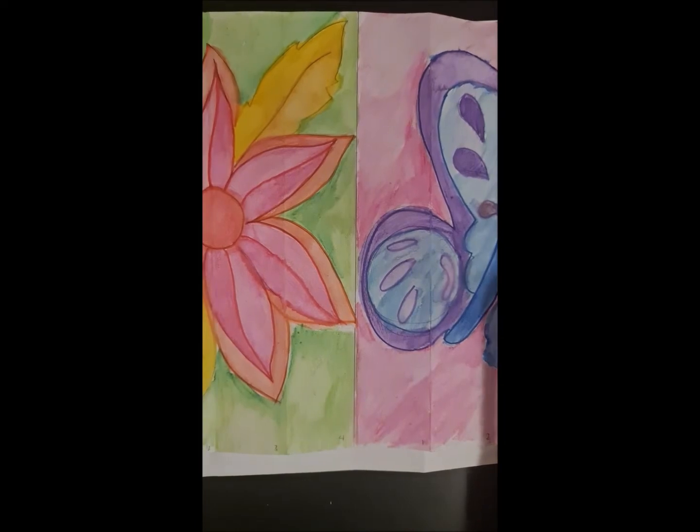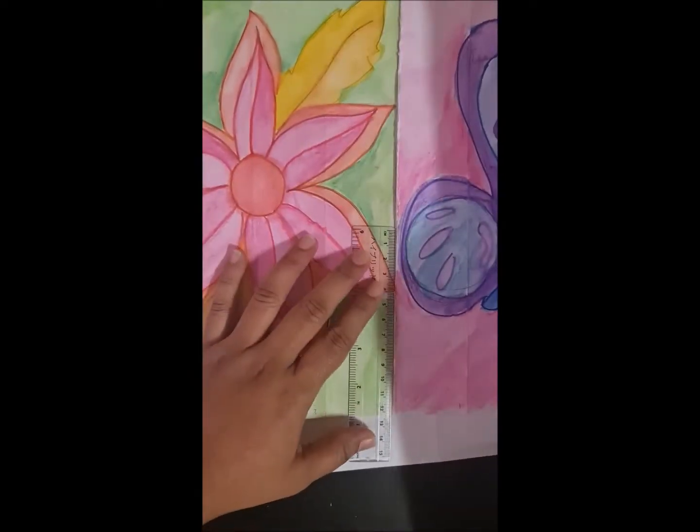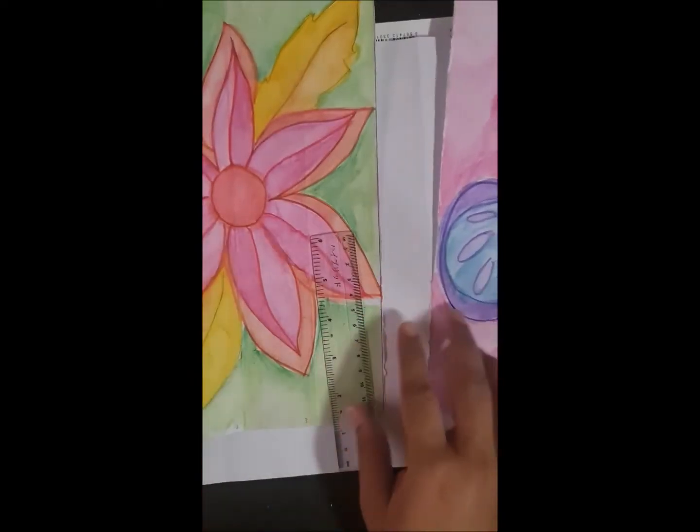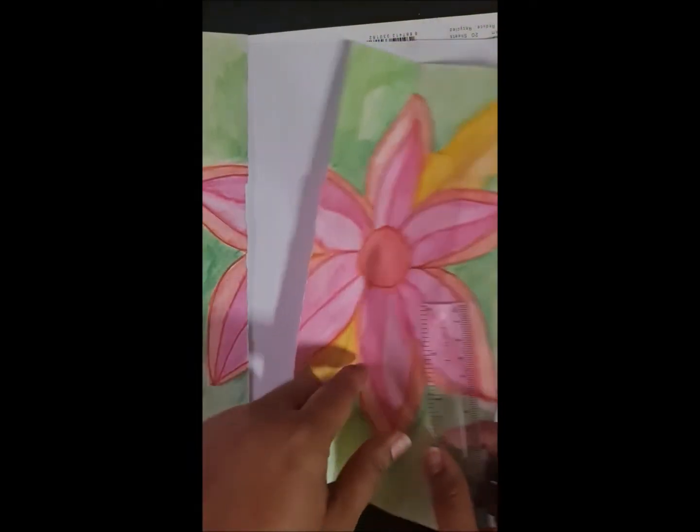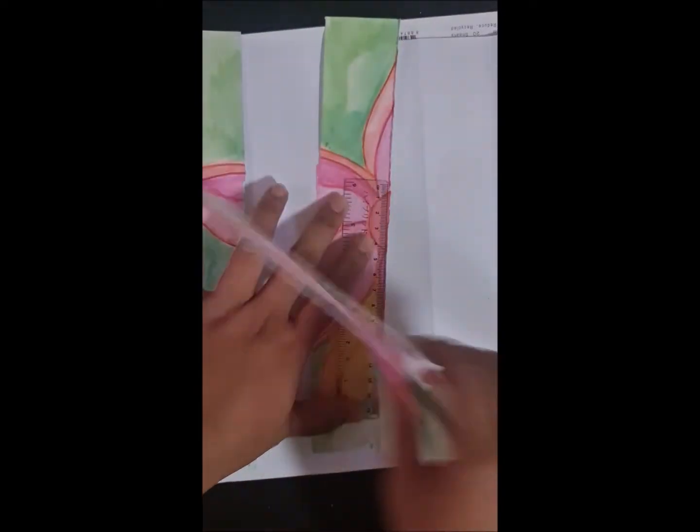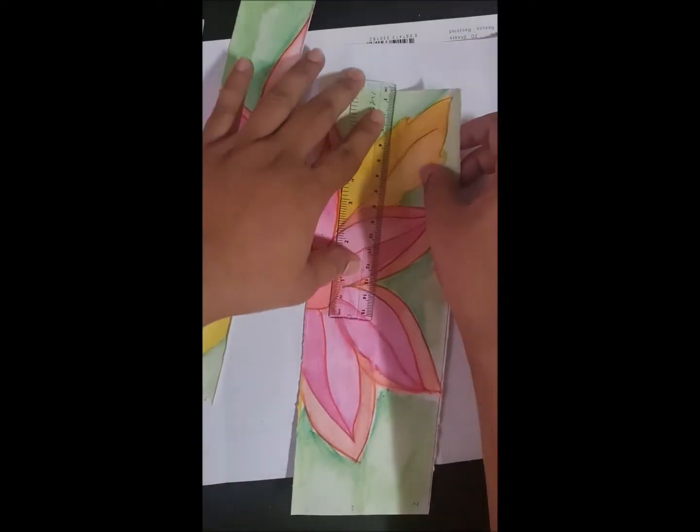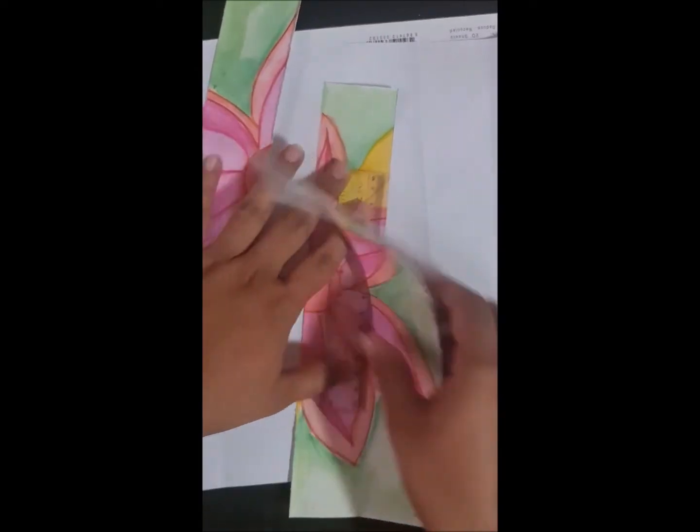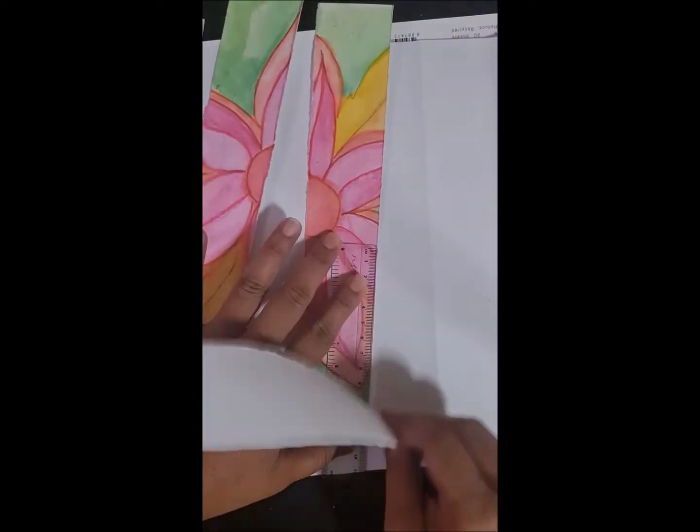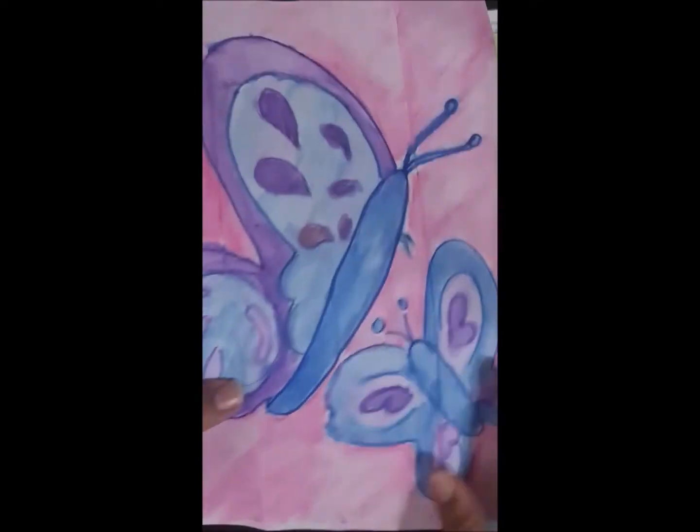And then proceed to tear it into the strips that you have folded it into. So you can also use a scissor, like I said. This picture too. This is my picture one. And proceed to do the same for your picture two as well.